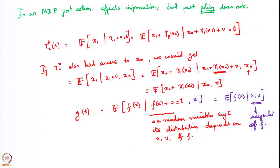However, once you give access to x, the dependence on γ1 disappears and all that remains is x and v. If you gave access to x, the conditional expectation would become just E[f(x) | x, v], and whatever you are conditioning on becomes independent of f. So in the classical information structure, having access to x means whatever you are conditioning on becomes independent of the previous policy function f.